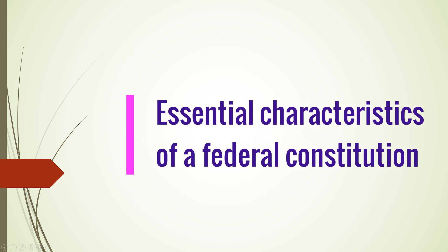Essential Characteristics of a Federal Constitution. 1. Distribution of Powers: The distribution of powers is an essential feature of federalism. Federalism means the distribution of the powers of the state among a number of coordinate bodies originating in and controlled by the constitution. In matters of national importance where a uniform policy is desirable, authority is entrusted to the union, and matters of local concern remain with the states.